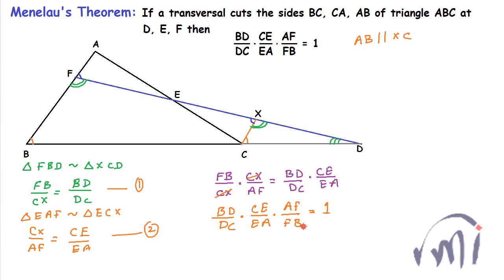And if I consider directions also, then BD divided by DC will be a negative term because BD and DC are in opposite directions. So if I consider directions also, the result will be equal to minus 1. So this is Menelaus' theorem.